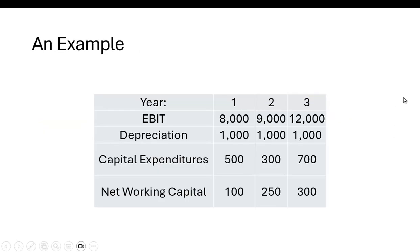So let's take a look at an example here. We have a case where EBIT is $8,000 in the first year, $9,000 in the second, $12,000 in the third. We're going to have the same depreciation each year of $1,000. Capital expenditures in year one are $500, in year two are $300,